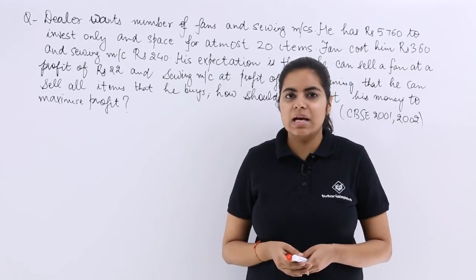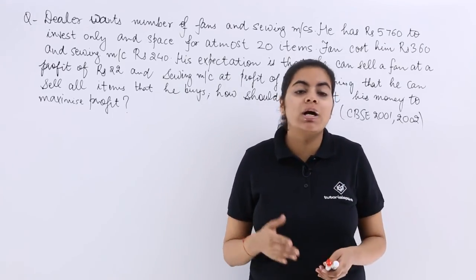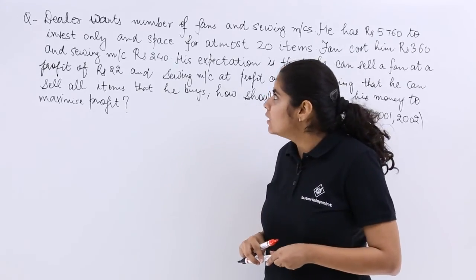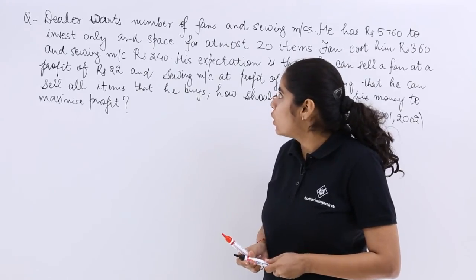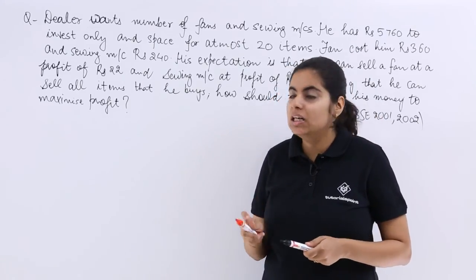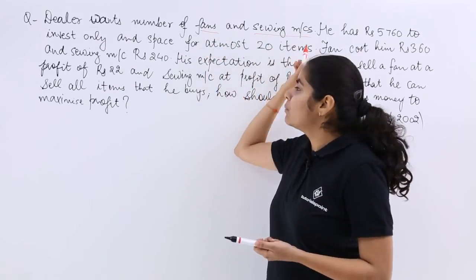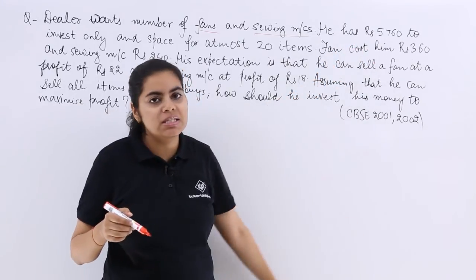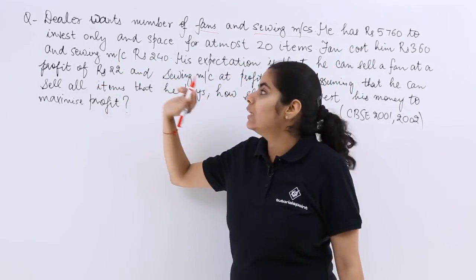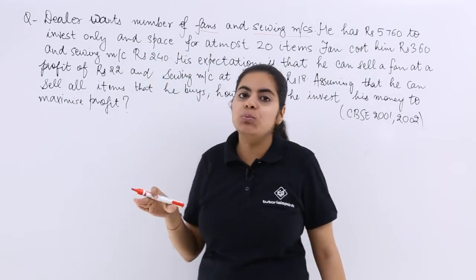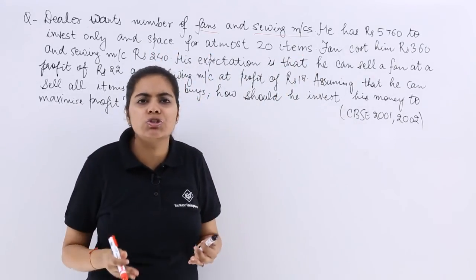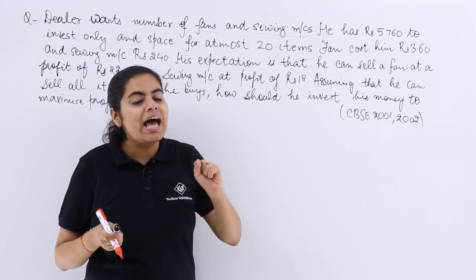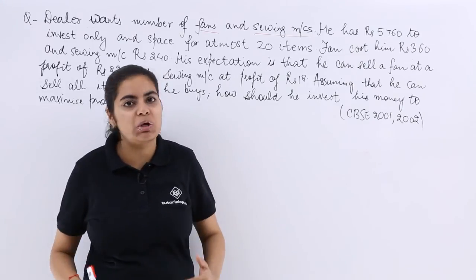This problem was asked in the CBSE examination in 2001 and 2002 consecutively. It is a very lengthy problem, so let's read it carefully. A dealer wants to buy a certain number of fans and sewing machines. He has Rs. 5760 to invest and space for at most 20 items — those are his two key constraints.